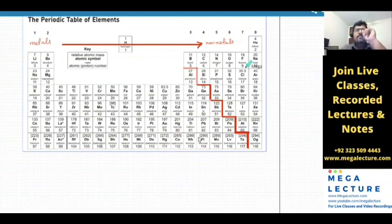Can anyone tell me one major difference between a metal and a non-metal? What's the one major, how do you differentiate between a metal and a non-metal?